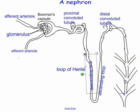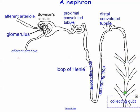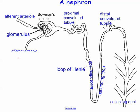At the very end you have this thing called the collecting duct. This picture is showing one collecting duct, but it's collecting from other nephrons as well. Imagine there's another one of these nephrons, and the end is plugged into here, and another one, and another one. So a collecting duct is actually collecting the goods from many of these nephrons as they're combined together.